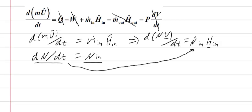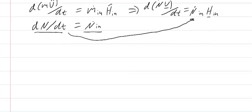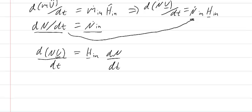So if I substitute that in and write that into my equation here, so the dNU/dt is equal to H_in dN/dt. So now I can cancel out my dt's, multiply both sides by the dt. And an important thing here is that we've said that the inlet conditions are constant. So if they're always at the same temperature and they're always at the same pressure, that means that this enthalpy here has to always be the same.